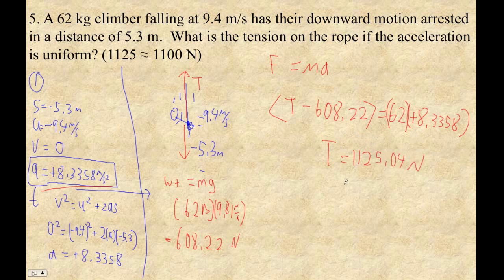Now we only have two sig figs. So I guess we have to say that the tension is about 1100 newtons. Ta-da. Yay.